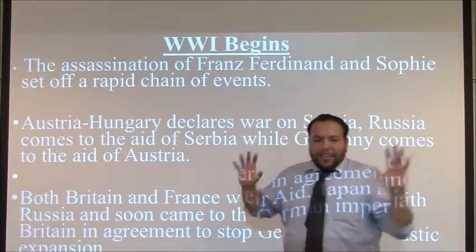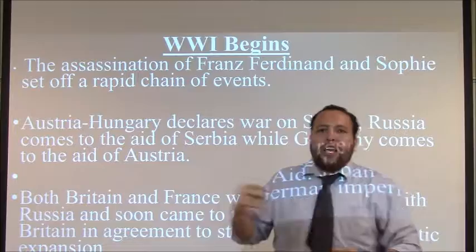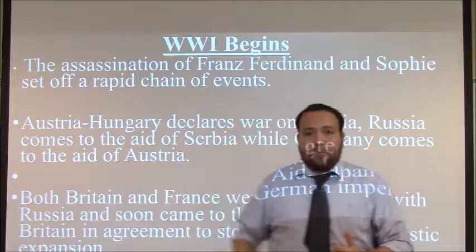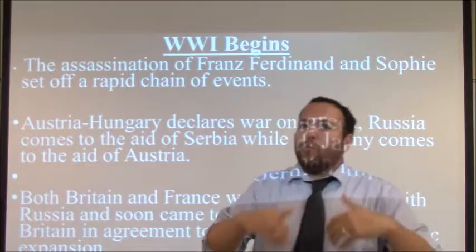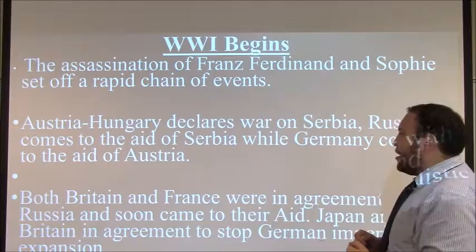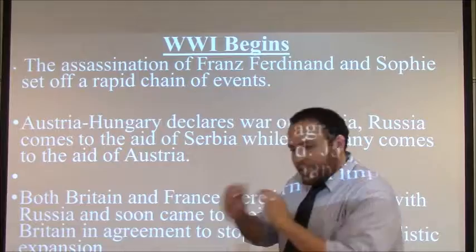No one had quite expected everybody to go to war at once. World War I happens rapidly — it's not like World War II, which takes time to get started. Germany invades France, then turns around and starts to invade Russia. Russia is already on the move. It all happens quickly because these nations were already preparing for war. As soon as this happens, they're mobilizing — Austria-Hungary declares war on Serbia, Russia comes to the aid of Serbia, Germany comes to the aid of Austria-Hungary, and both Britain and France come to Russia's aid as well. Japan and Britain also come into conflict with Germany. It just spirals out of control.